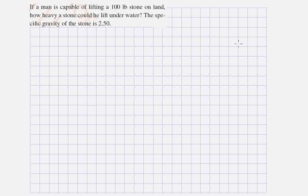If a man is capable of lifting a 100 pound stone on land, how heavy a stone could he lift underwater? The specific gravity of the stone is 2.5.